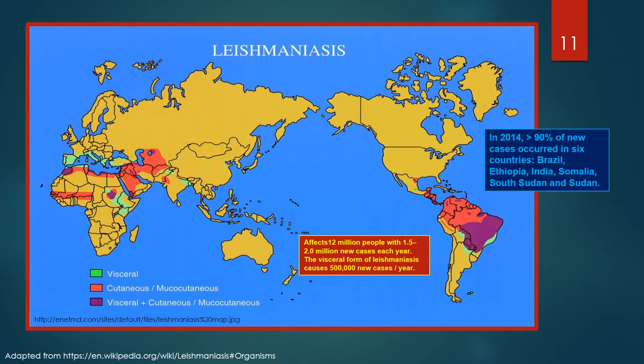Out of 200 countries and territories reporting to the WHO, 97 are endemic for leishmaniasis. It is found from the rainforests of Central and South America to the deserts of Western Asia and the Middle East, affecting as many as 12 million people with 1.5 to 2 million new cases each year. In 2014, more than 90% of new cases occurred in six countries: Brazil, Ethiopia, India, Somalia, South Sudan, and Sudan. As of 2010, it caused about 52,000 deaths, down from 87,000 in 1990.